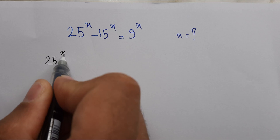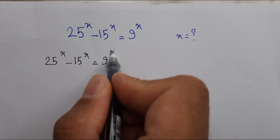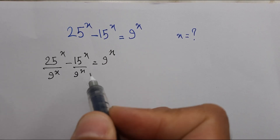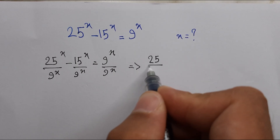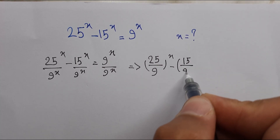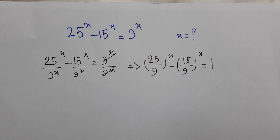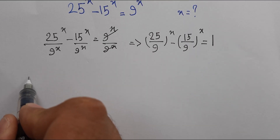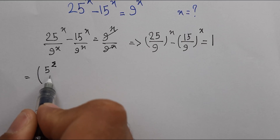So we divide both sides by 9^x: 25^x over 9^x minus 15^x over 9^x equals 1, since the right side cancels out to give us 1.